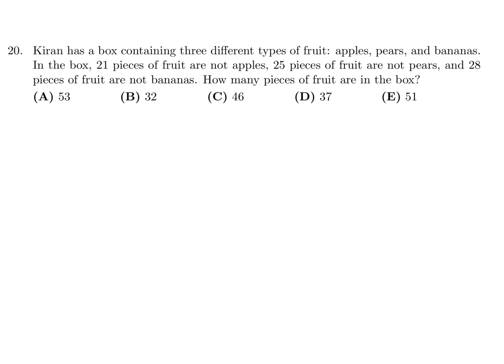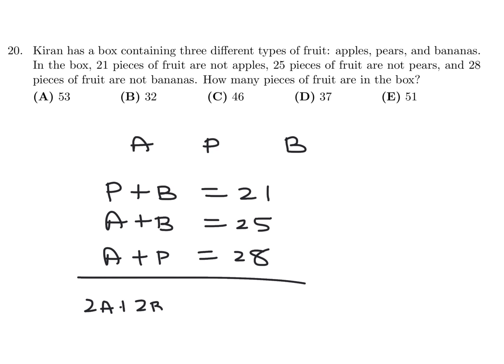Kiran has a box containing three different types of fruit, apples, pears, and bananas. In the box, 21 pieces of fruit are not apples. 25 of the fruit are not pears and 28 are not bananas. How many pieces of fruit are in the box? Okay. So we have A, P, and B representing apples, pears, and bananas. P plus B is 21 that are not apples. A plus B is 25 that are not pears. And A plus P is 28, which are not bananas. So if we add all these guys up, we get 2A plus 2B plus 2P is equal to 74. And if we divide through by 2, we get A plus B plus P is equal to 37. How many pieces of fruit are in the box is represented by A plus B plus P and that is 37. So therefore, number 20, the answer is D.